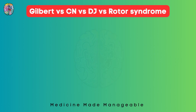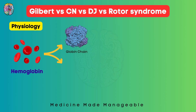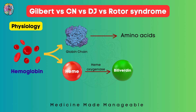First of all, we are going to look at the physiology — where unconjugated bilirubin comes from and how it is conjugated. In RBCs we have hemoglobin, which is broken into the globin chain and the heme. The globin part is broken into amino acids that can be recycled. The heme is converted into biliverdin by heme oxygenase, and further biliverdin is converted into unconjugated bilirubin by biliverdin reductase.